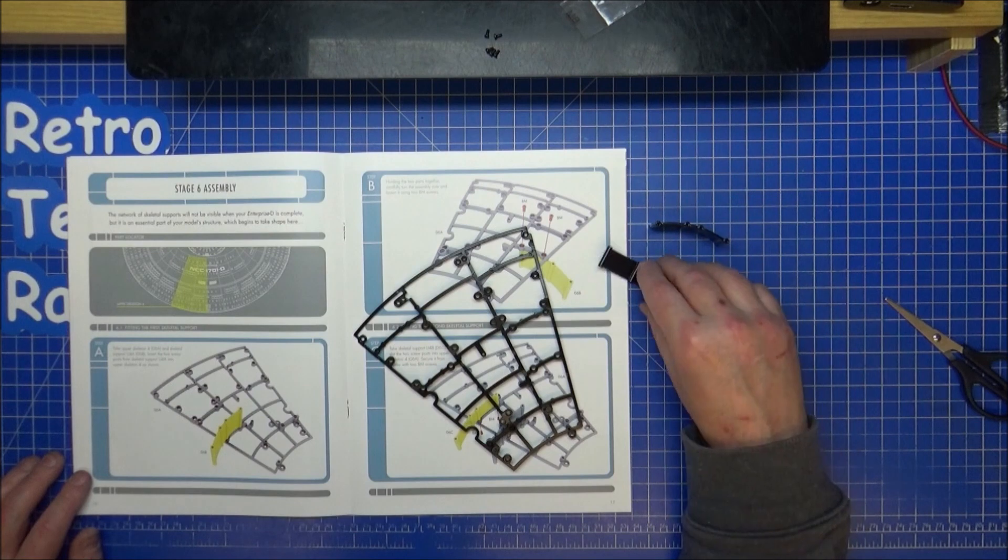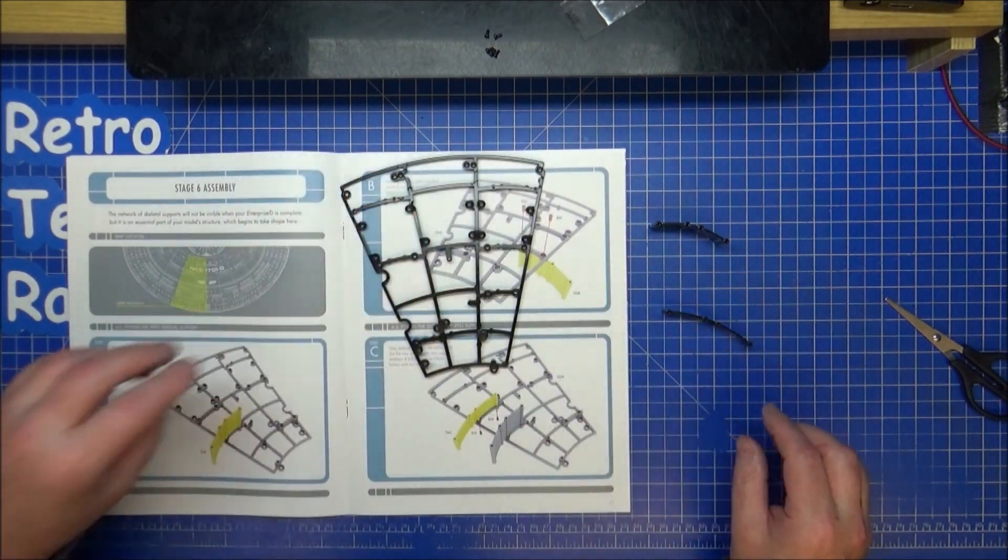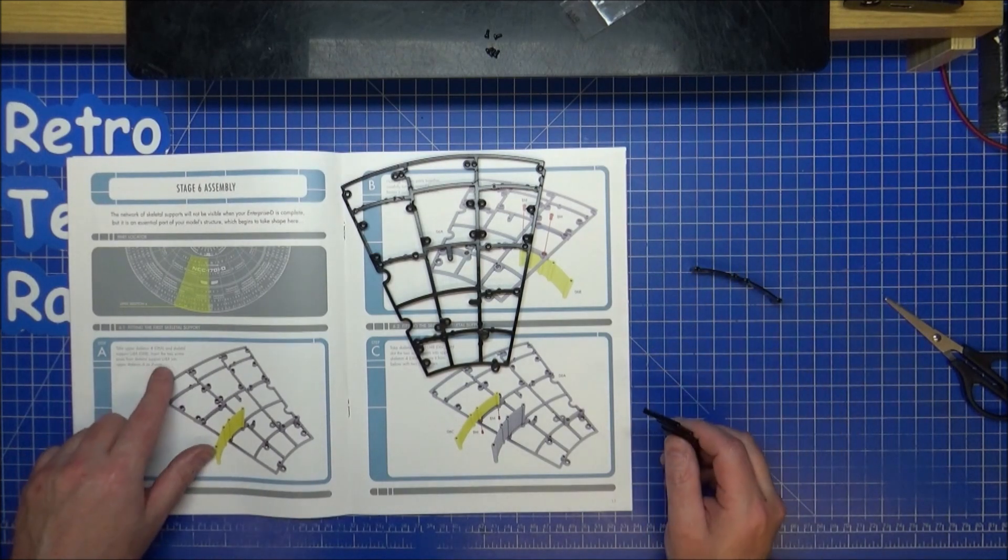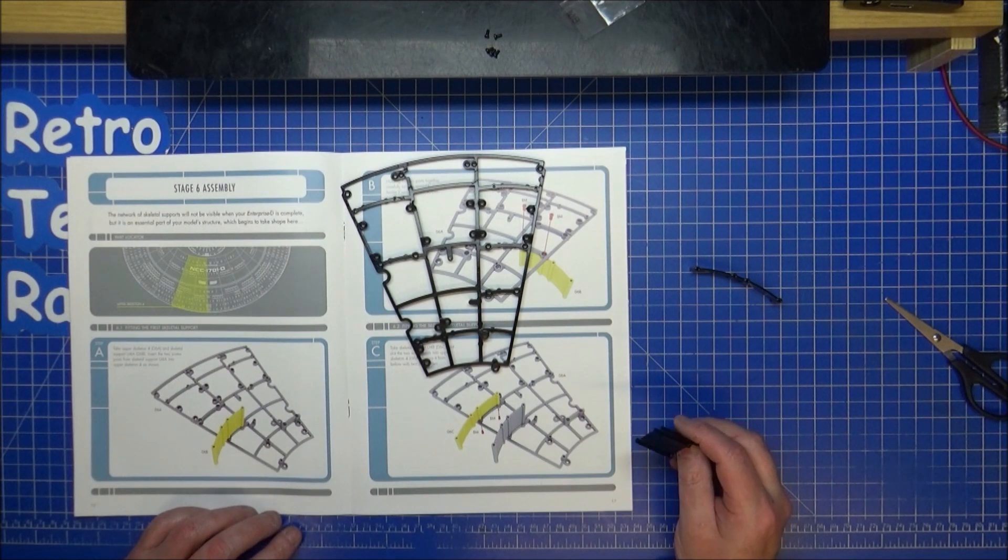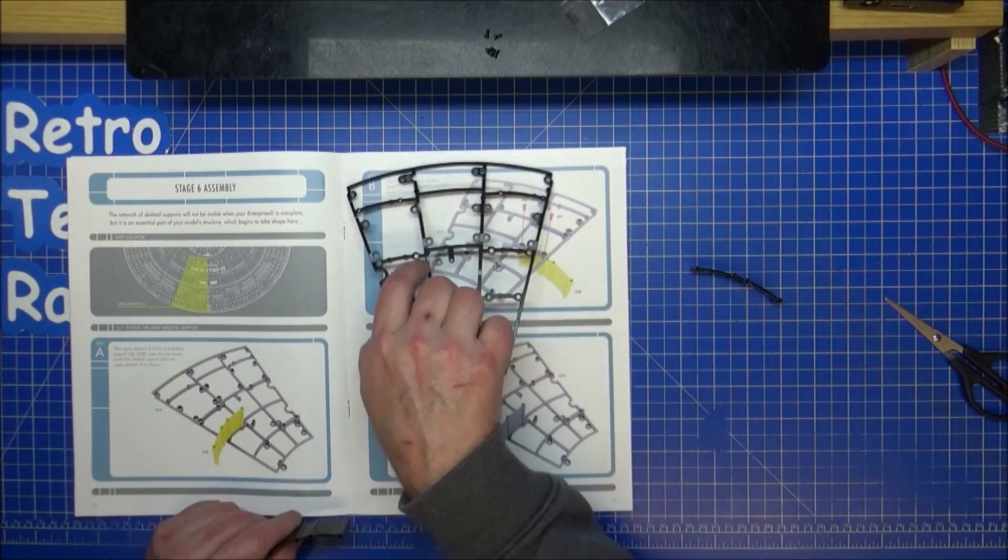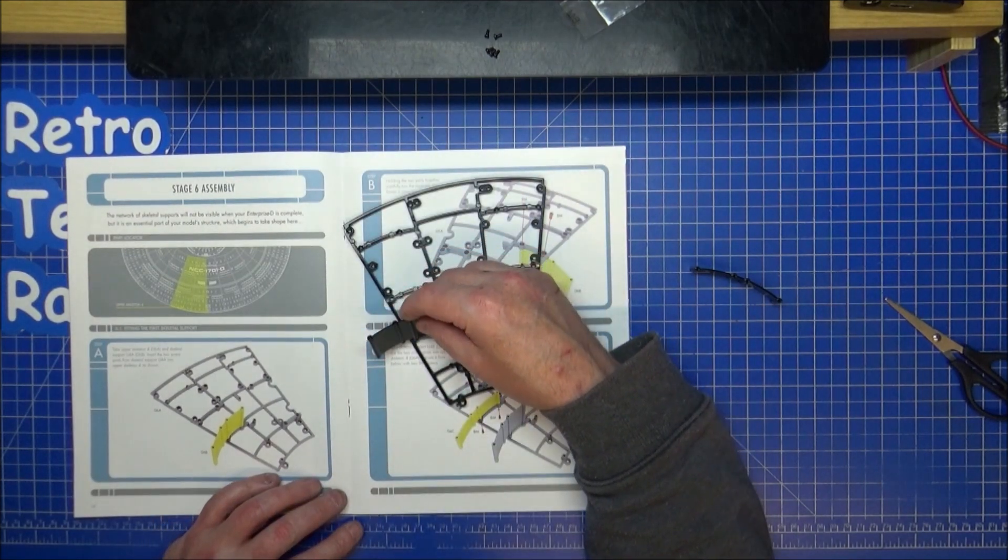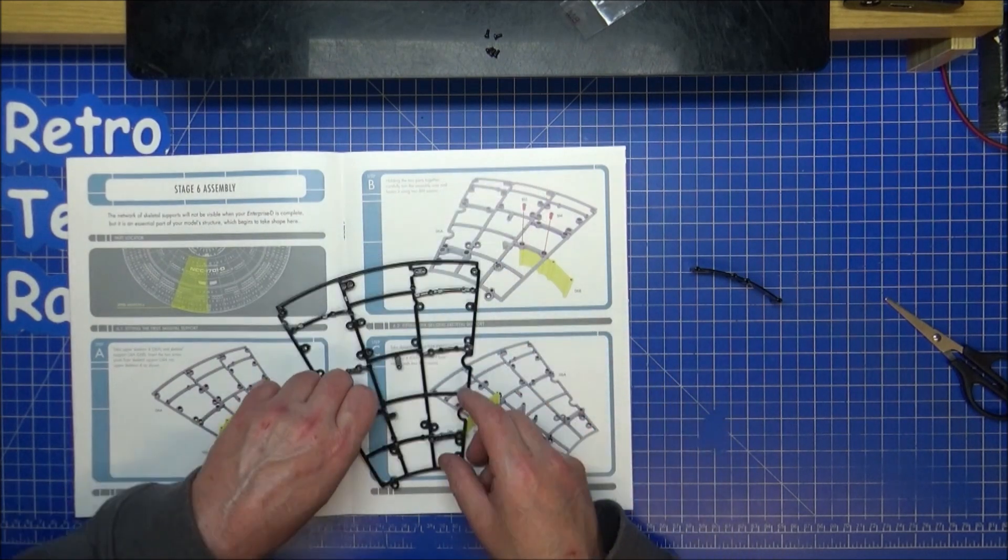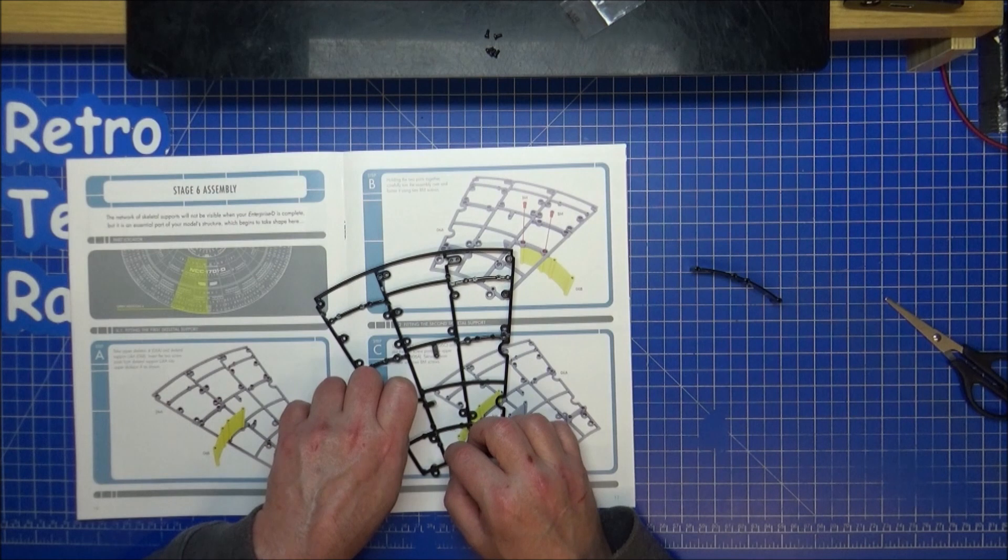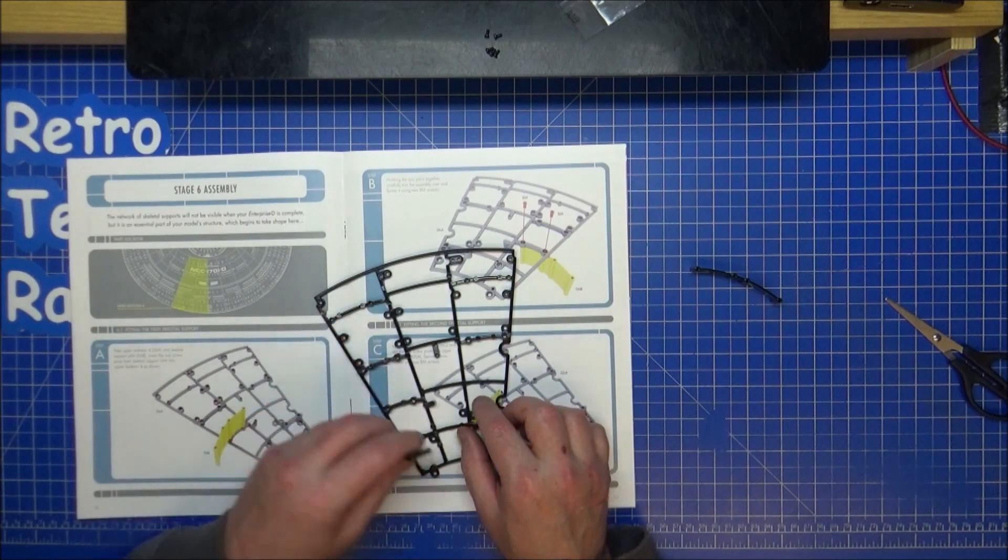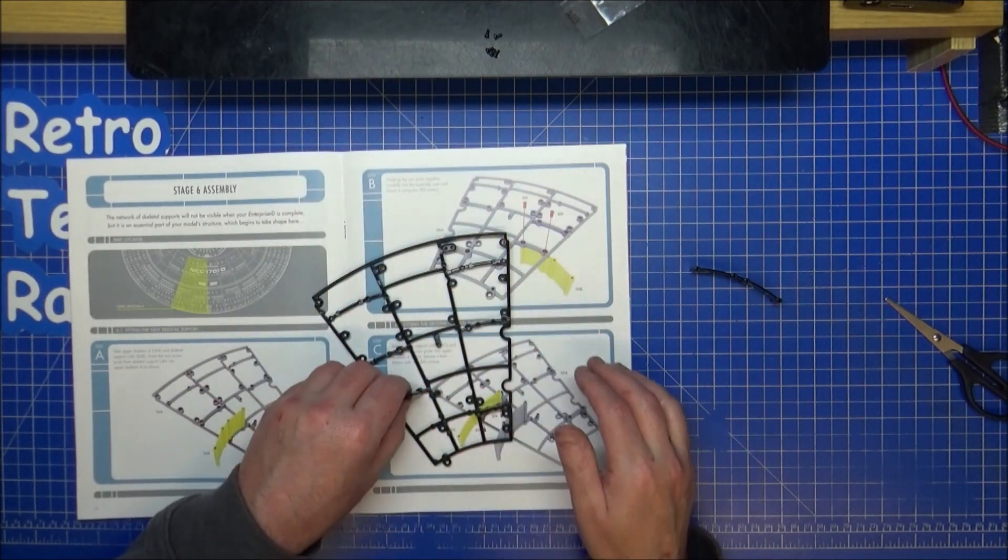Take the upper skeleton 4, which is O6, well there's only one anyway. And skeletal support U4A, which there's two, one's thick and one's thin, and I assume this is the thick one, which does actually seem shorter but not by much. Insert the two screw posts from skeleton support. This will go... let's try that way around. So the two skeleton ports are going there and there.